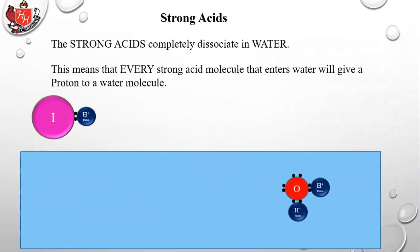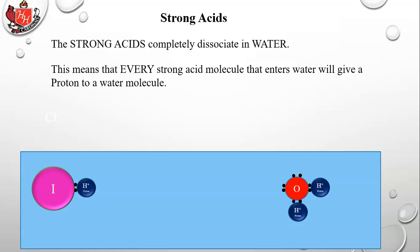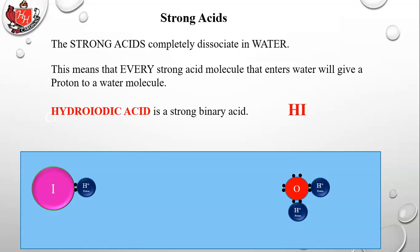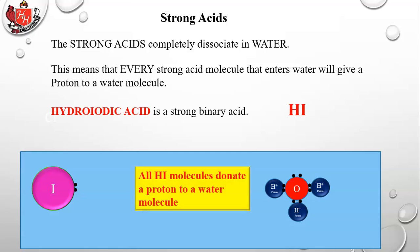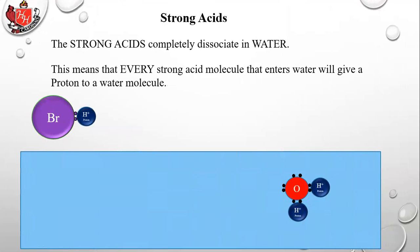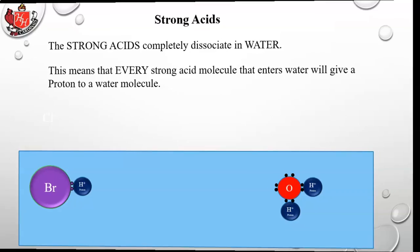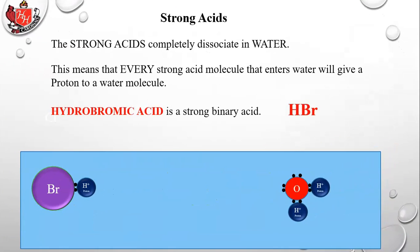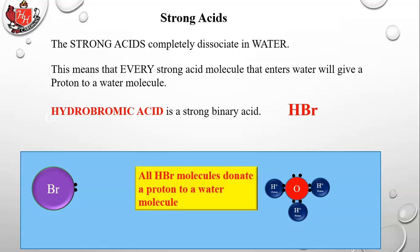Hydroiodic acid HI is a strong binary acid. The proton moves over to the water molecule, leaving its electron behind — all HI molecules donate a proton to a water molecule. Hydrobromic acid HBr similarly donates its proton to the water molecule, creating a Br- ion and an H3O+ hydronium ion. All HBr molecules donate a proton to a water molecule.